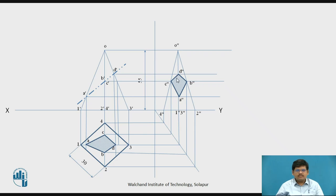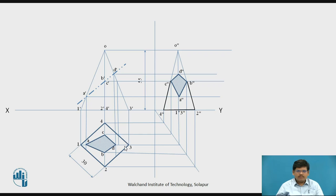This is the sectional view of the solid. Let us darken the remaining portion. This part has been removed, so the remaining portion of your solid is what must be darkened, to indicate the complete object that has been retained.